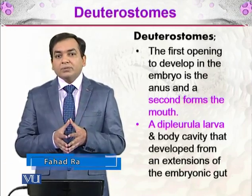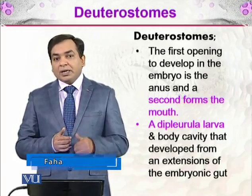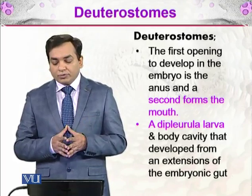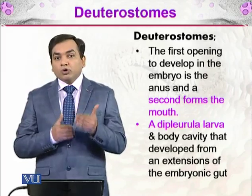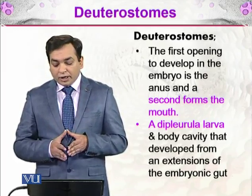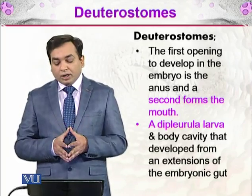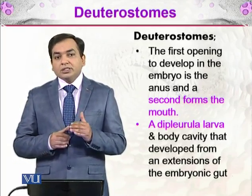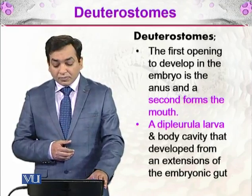The first opening that develops forms an anus, which is the organ for expelling undigested food, and the mouth is where food is eaten. They have a proto gut in their body structures, a diplurula larva, and a body cavity that is developed from an extension of the embryonic gut.